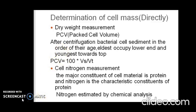The next method is measurement of cell nitrogen. The major constituent of cell material is protein, and nitrogen is the characteristic constituent of protein. Therefore, a bacterial population can be measured in terms of cell nitrogen. The cells are harvested, washed, and cell nitrogen is estimated by chemical analysis. Some problems associated with this method are that it is a laborious process and can only be applied to concentrated populations.